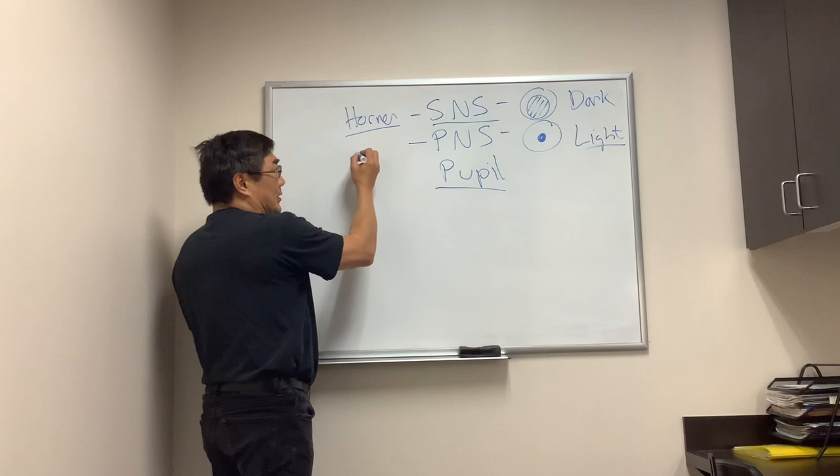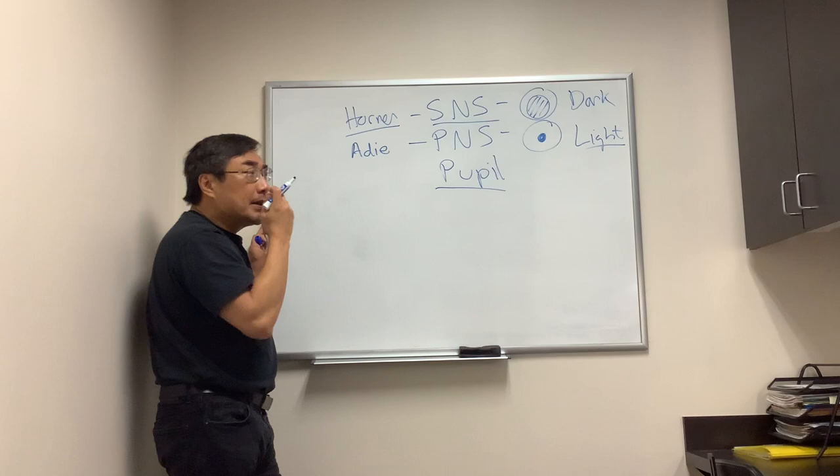If it's a parasympathetic nervous system, if it's just the pupil, that's usually idiopathic, the Adie's tonic pupil, but it could be from third nerve palsy, or pharmacologic dilation, or the iris itself.